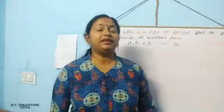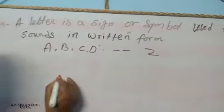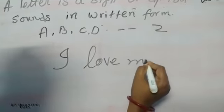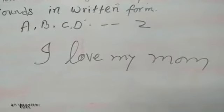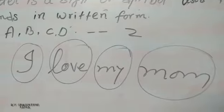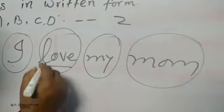Now I am going to teach you about English letters. For example, take the message 'I love my mom' on WhatsApp. Here, 'I' is a word, 'love' is a word, 'my' is a word, and 'mom' is a word. Each of these words is made up of several types of letters.